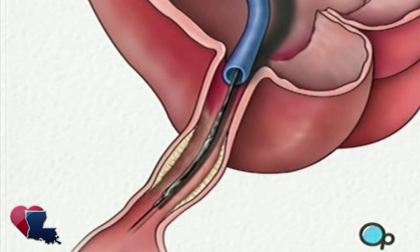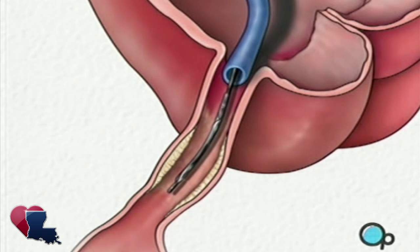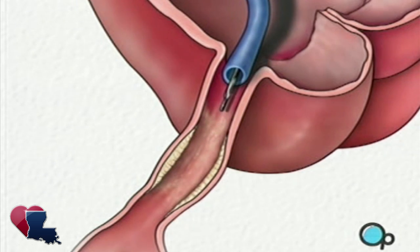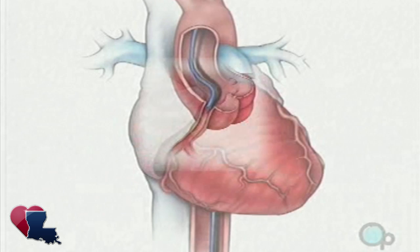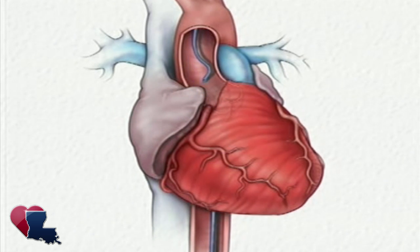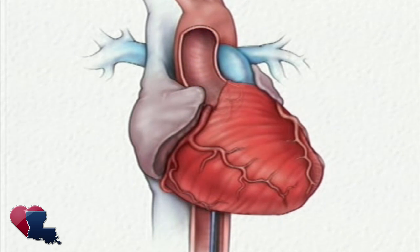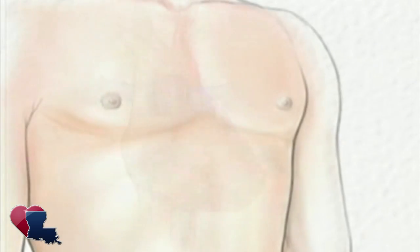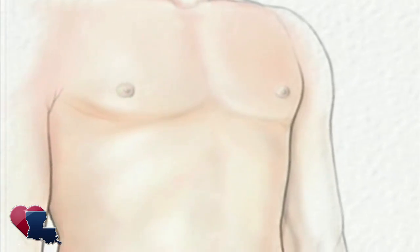Finally, after a thorough investigation of the region, the catheter and guide wire are withdrawn. The dye that had been injected will break up and leave your body as waste. Slight pressure is applied to the incision in your leg in order to prevent bleeding.